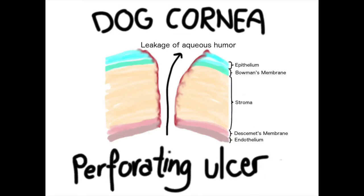A perforating ulcer is the most severe type. In this case, Descemet's membrane is broken and aqueous humor — the liquid inside the eye — leaks out.